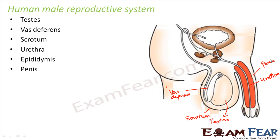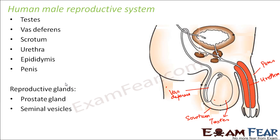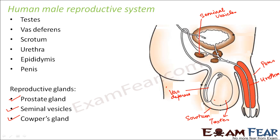Other than these, there are also quite a few important reproductive glands present in the human male. The important reproductive glands are: prostate gland, seminal vesicles, and Cowper's glands. Here you have the seminal vesicle, this one is the prostate gland, and just below the prostate gland you have two small structures called the Cowper's glands. We will talk about each of these in the next few slides.